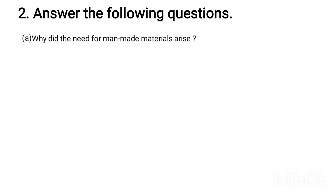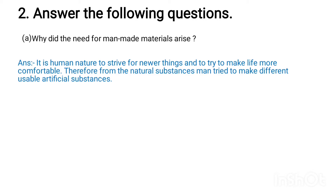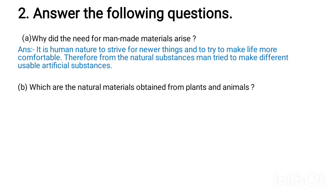Question 2a: Why did the need for man-made material arise? Answer: It is human nature to strive for newer things and to try to make life more comfortable. Therefore, from natural substances, man tried to make different usable articles and artificial substances.